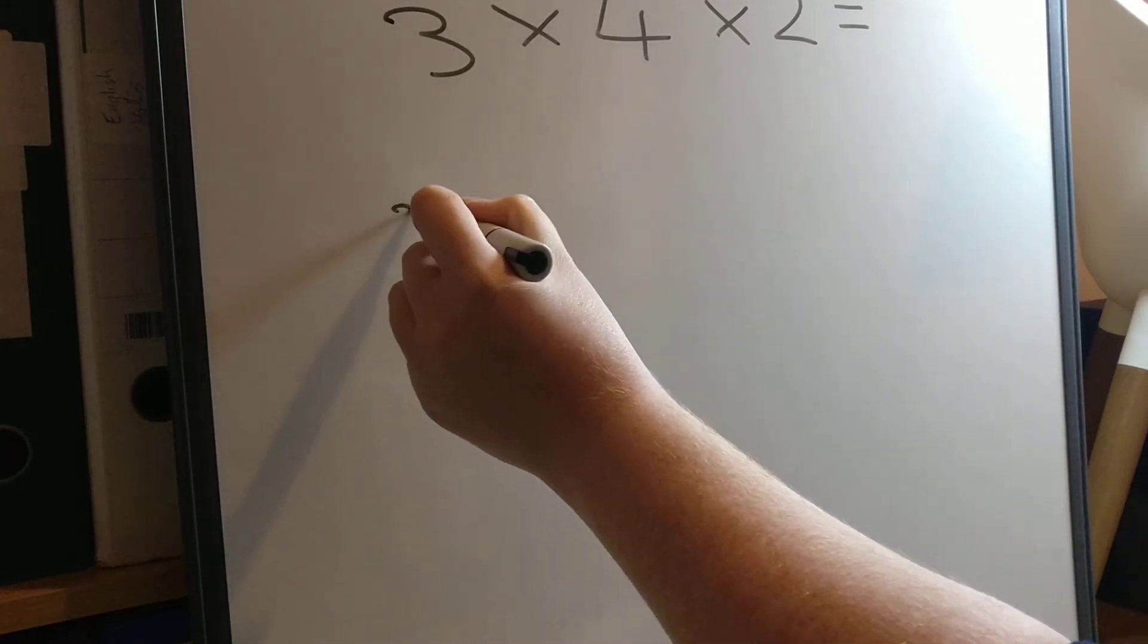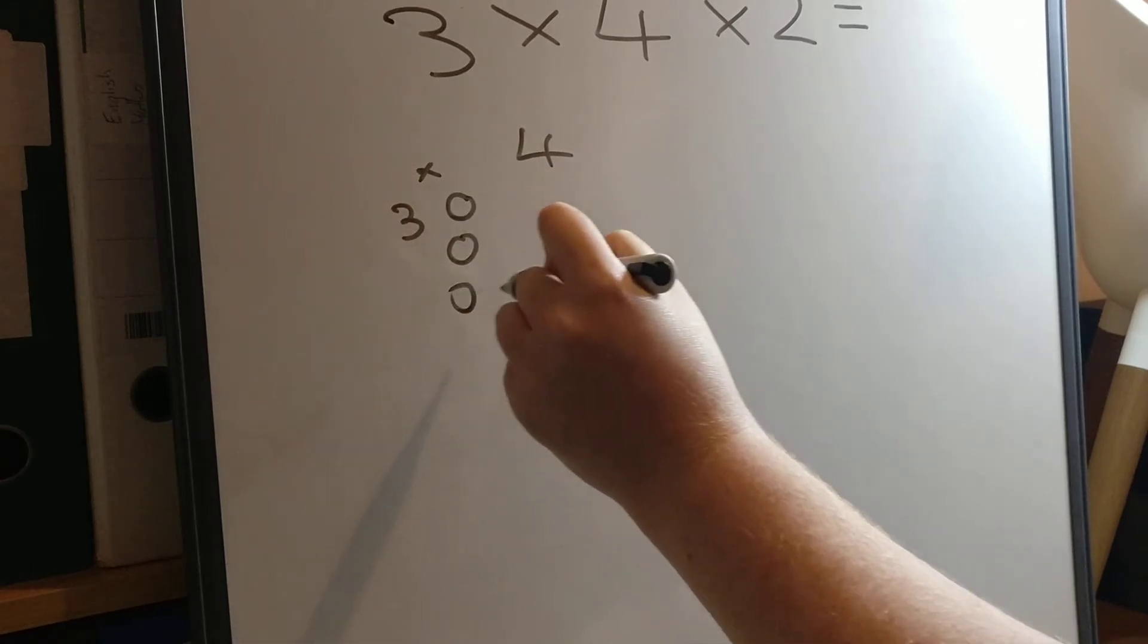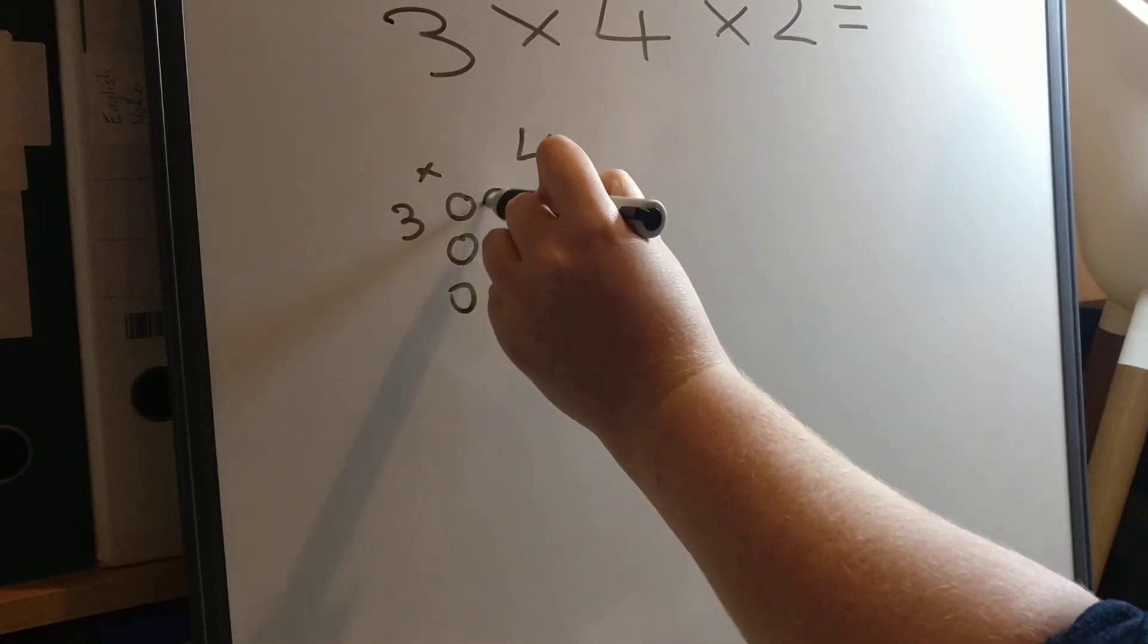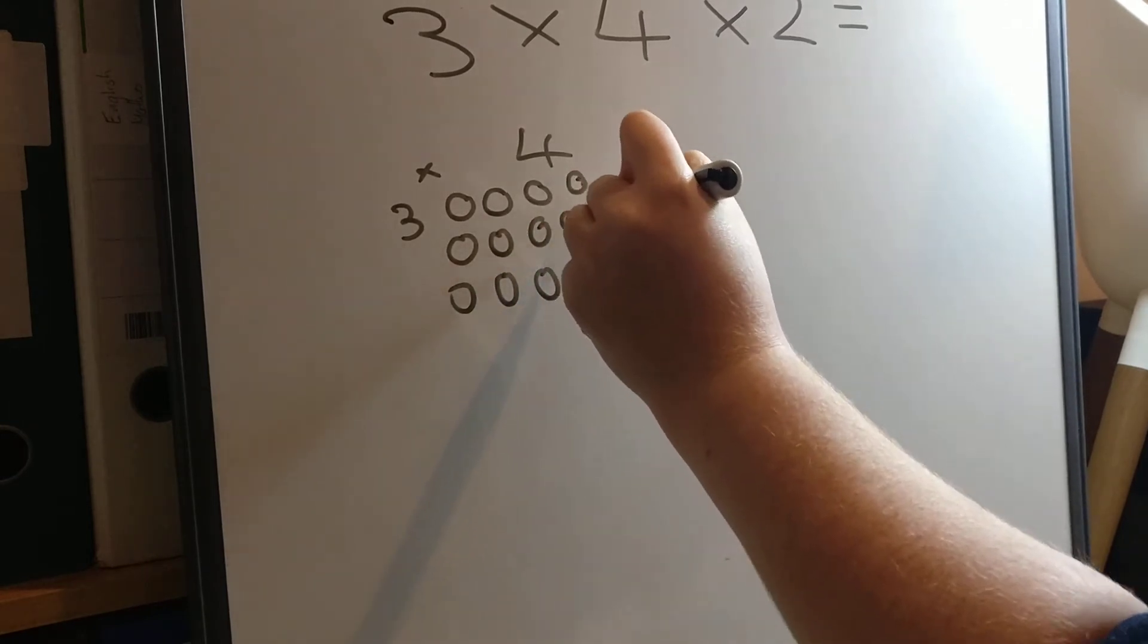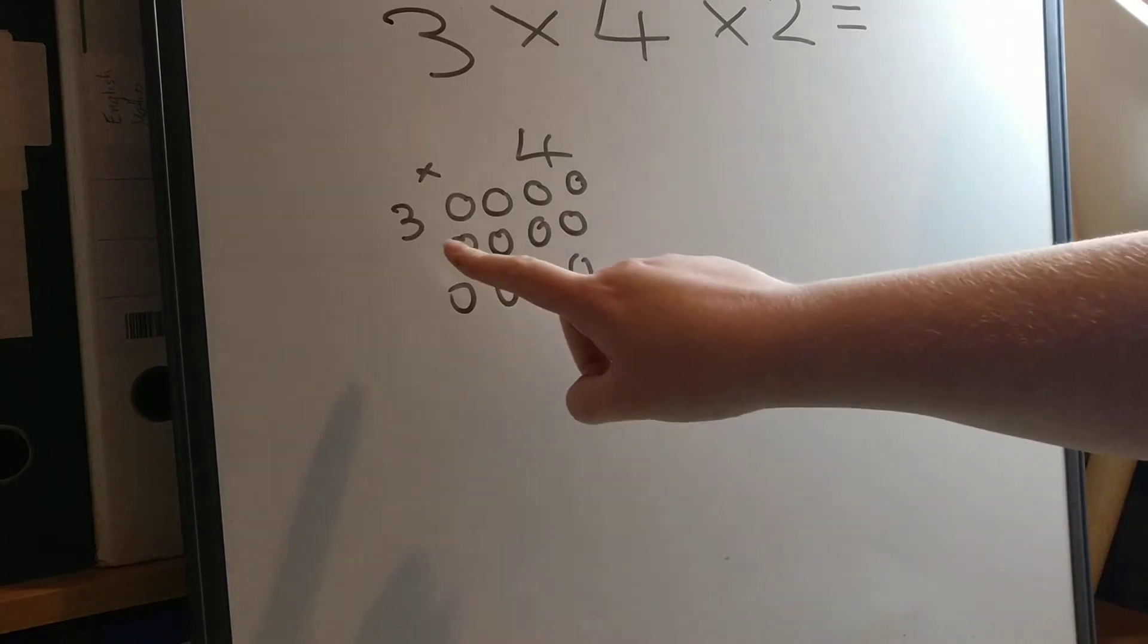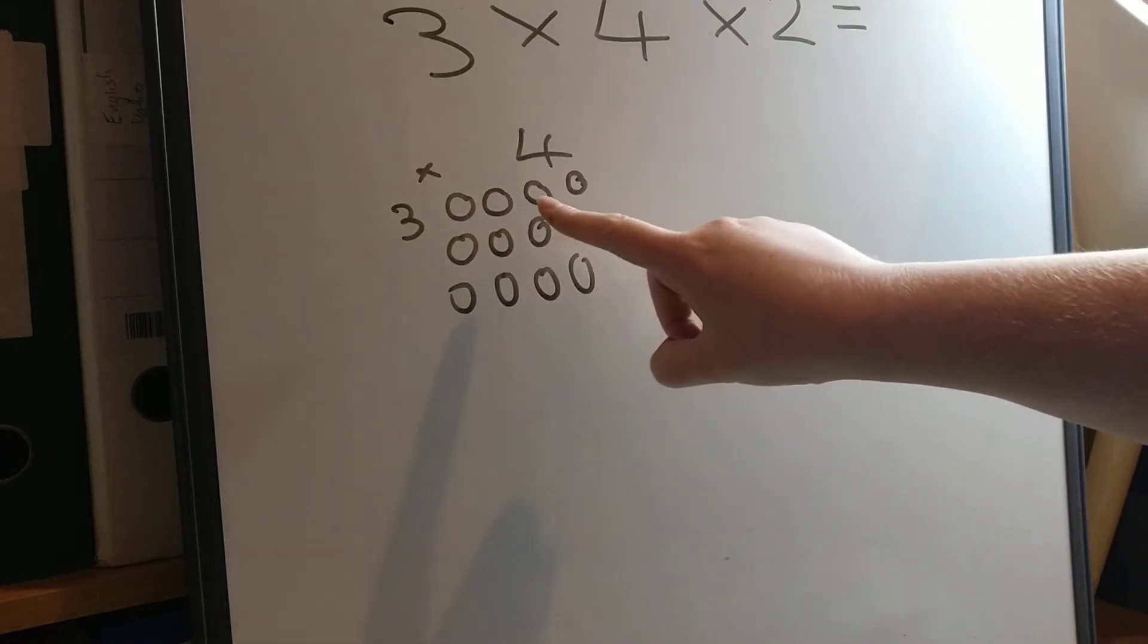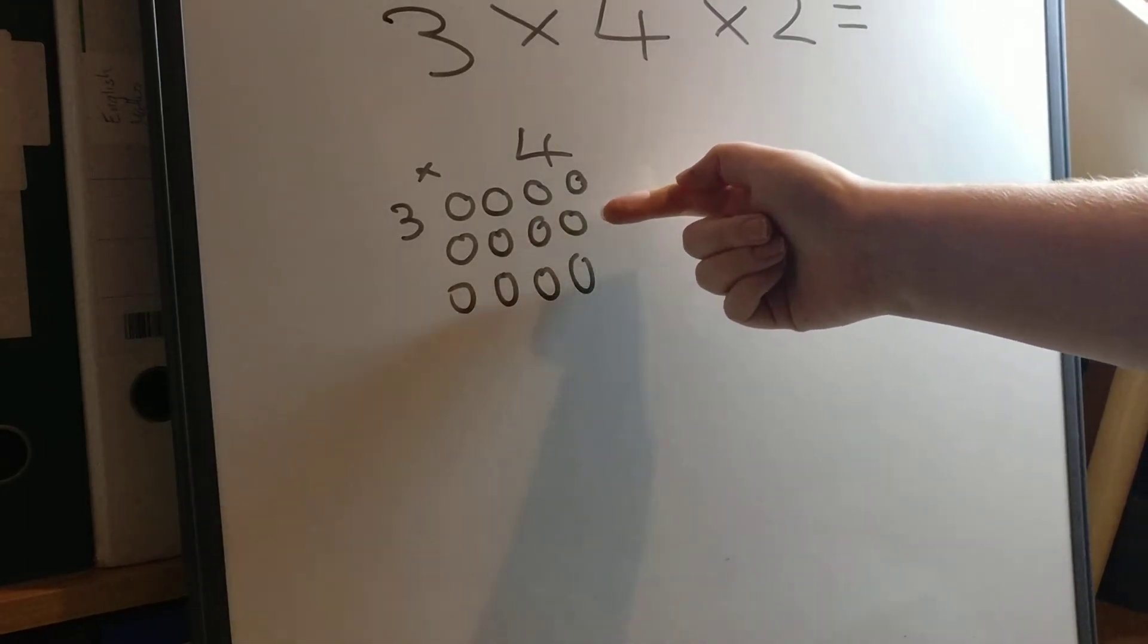So we've got 3 times 4, one, two, three and we need four lots of three. And when we build an array to find the answer we can count all the counters up together to find the total or you can count in the multiple. So to count them all up one, two, three, four, five, six, seven, eight, nine, ten, eleven, twelve.